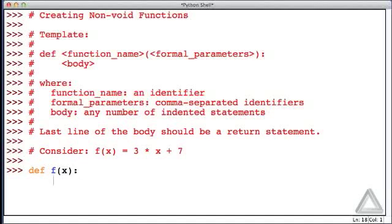Hitting return, IDLE knows that now you have to give me the body of the function, and notice that we don't have the interactive prompt—it's waiting for more code. Let's simply do this. We need a return statement, so let's say what the function should return, and it returns 3 times x plus 7.